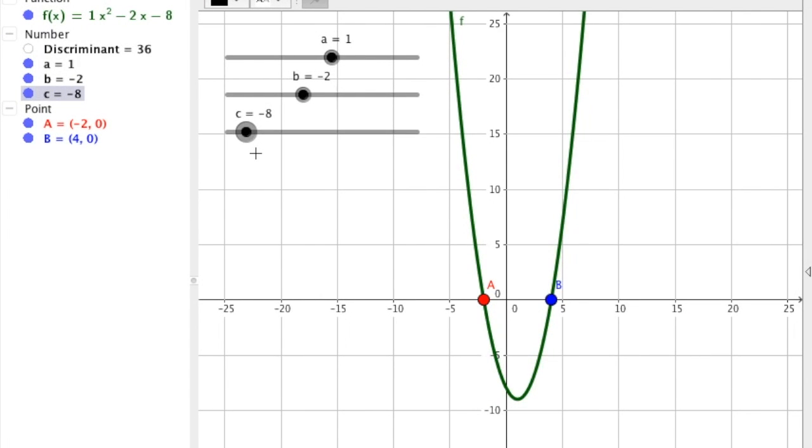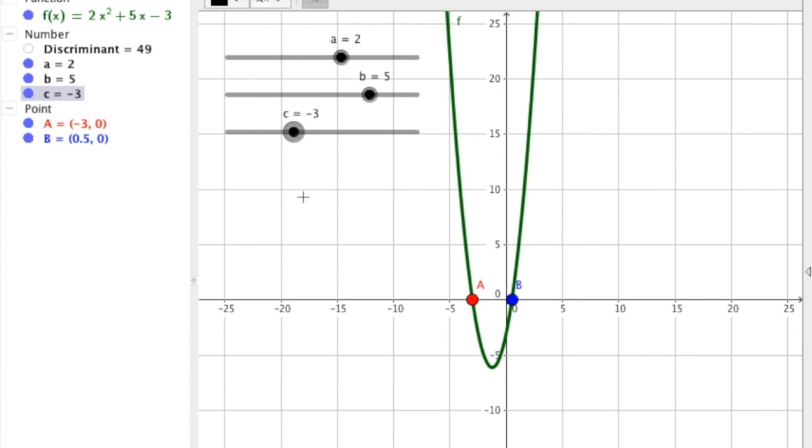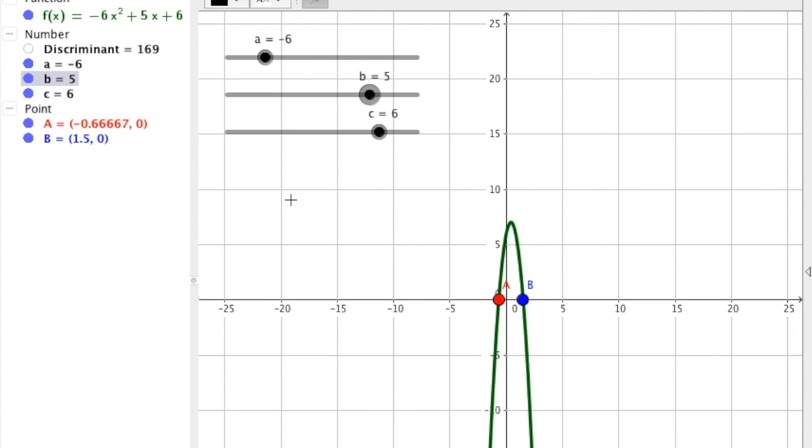Welcome back. First up, I found a discriminant of 36 when a is 1, b is negative 2, and c is negative 8, with roots at negative 2 and positive 4. I ended up with the discriminant of 49 when a is 2, b is 5, and c is negative 3, and this time with roots negative 3 and 0.5. And this time I ended up with the discriminant of 169, which is 13 squared, with an a of negative 6, b of 5, and c of 6, this time with the root of negative 0.66666 repeating, or negative 2 thirds, and 1.5 or 3 halves.